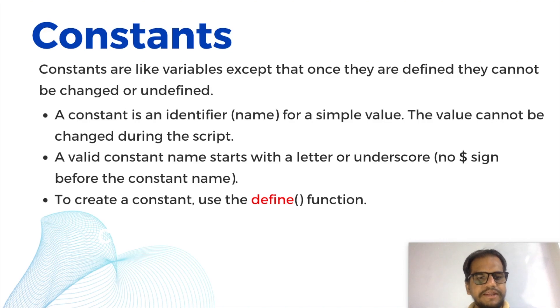A valid constant name starts with a letter or underscore, no dollar sign before the constant name. So in this case also we can't use the dollar sign. A constant is similar like a variable but we can't use the dollar sign before the constant name.